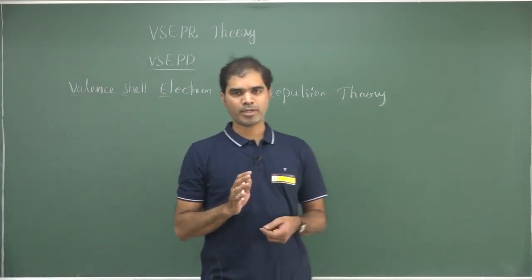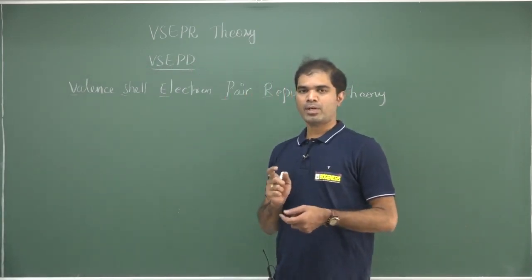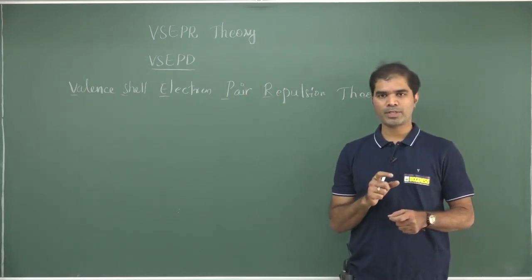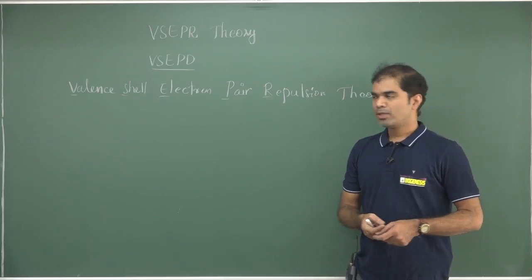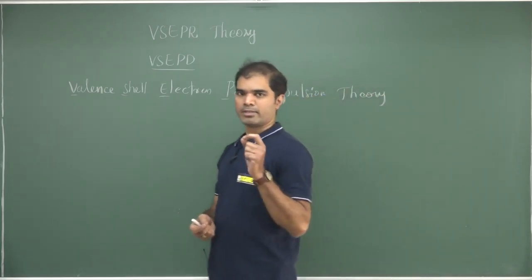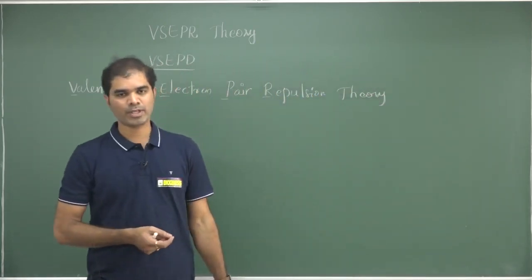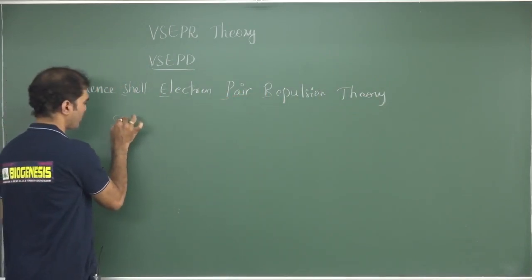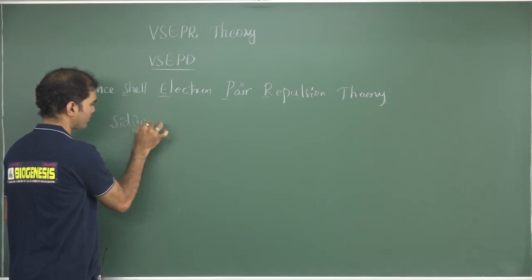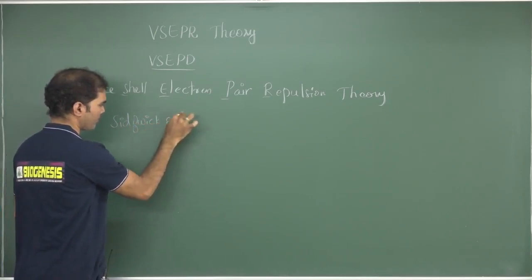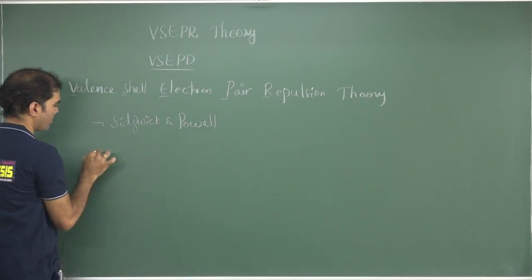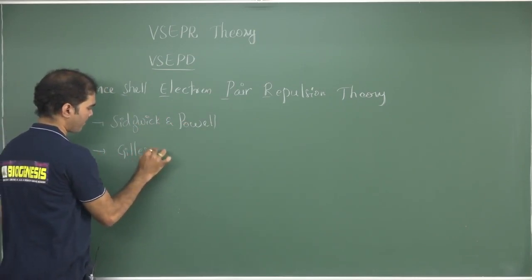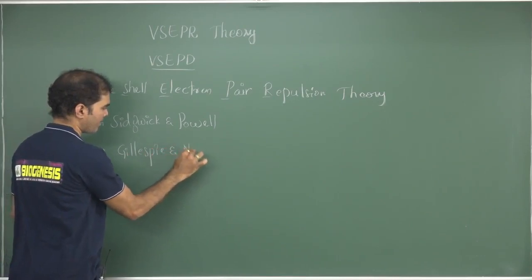When we say a covalent bond has a directional property, we also define how these bonds are directed and what the geometry is for a particular given molecule or corresponding ion. To explain the geometries of such molecules, there was a beautiful theory put forward by Sidgwick and Powell, and later this was developed by Gillespie and Nyholm.